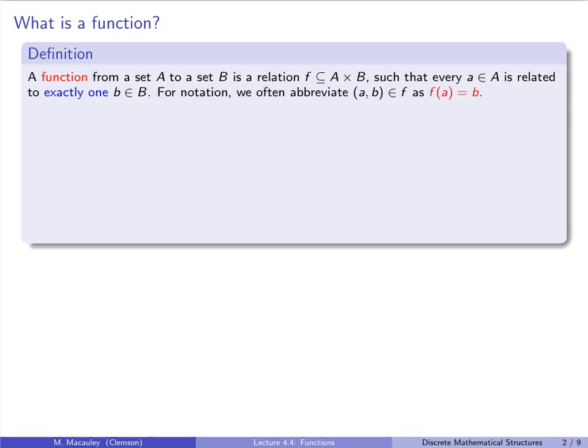For notation, we often abbreviate the ordered pair (a, b) being in F as F(a) = b. Recall that formally a relation was a subset of A×B. We call A the domain, B the codomain, and we write F: A → B for F as a function from A to B.